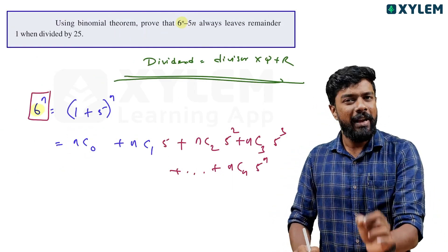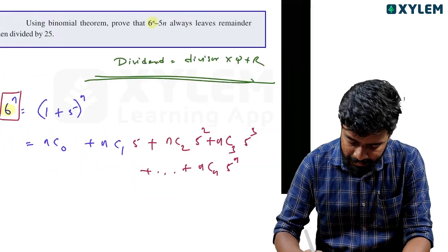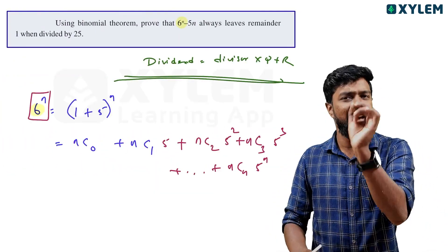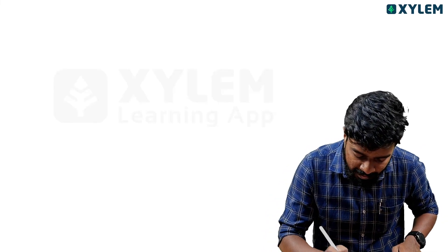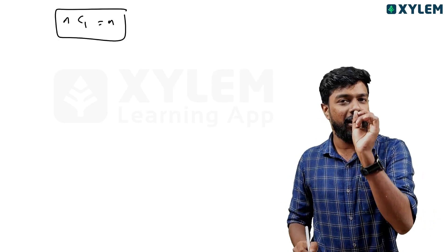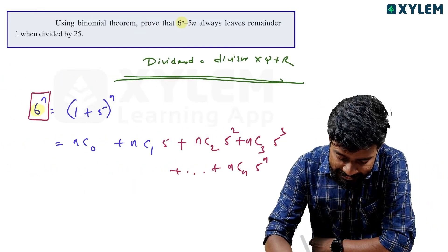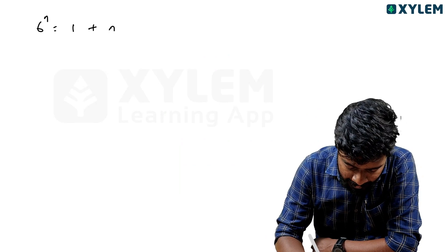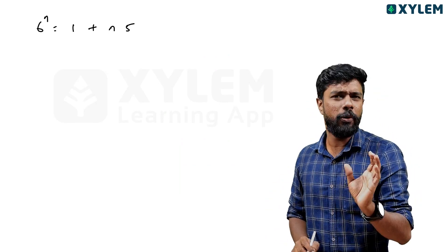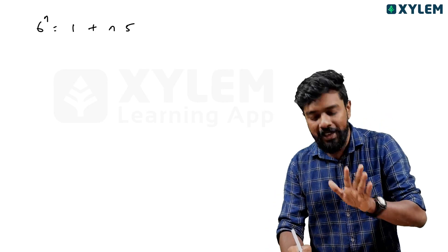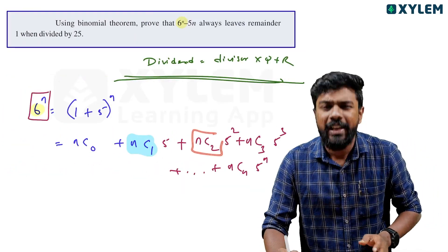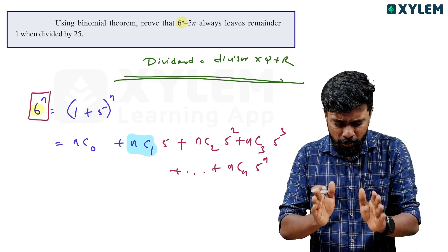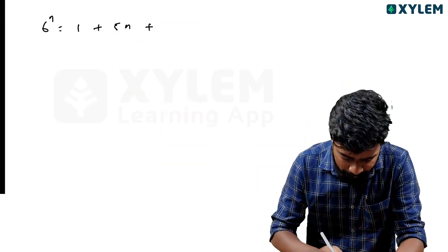So 6 raised to n equals: nc0 plus nc1 times 5, which is 1 plus 5n, plus nc2 times 5 squared. Now nc2 is n into (n minus 1) divided by 2, multiplied by 5 squared. Since 5 squared equals 25, we take out 25 as a common factor from the remaining terms.